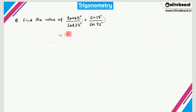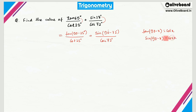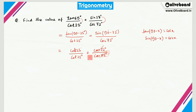I can write this as tan(90° − 25°) divided by cot 25°, plus sin(90° − 72°) divided by cos 72°. Since tan(90° − x) = cot x and sin(90° − x) = cos x, this becomes cot 25° divided by cot 25°, plus cos 72° divided by cos 72°. Both fractions cancel out, leaving 1 + 1 = 2 as the answer. This concept was taught in the basic video.